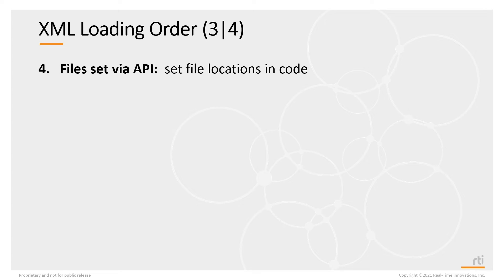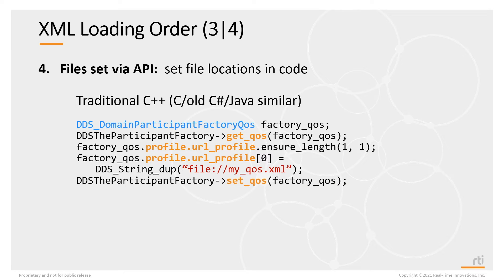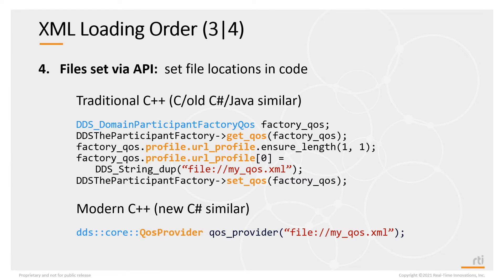The fourth place ConnectDDS will load XML definitions from are files set in code via APIs. In the traditional C++, C, old C-sharp, and Java APIs, this is done in the domain participant factory using the factory QoS setting with the URL profile field, which is a sequence so you can specify multiple file locations. When using the modern C++ or new C-sharp API, you do this using the QoS provider class — when you instantiate a QoS provider object, you specify one or more files in its constructor.